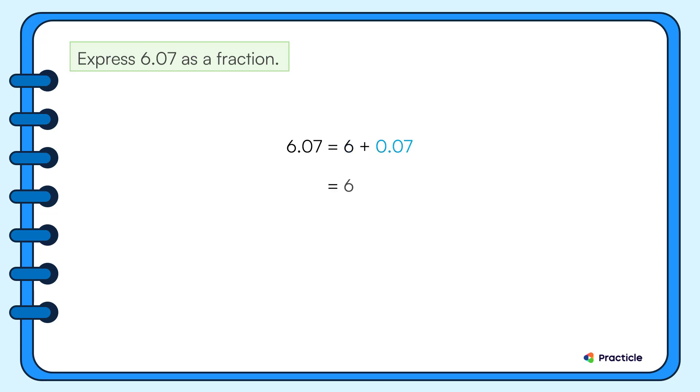0.07 is the same as 7 hundredths. When we write this as a fraction, we can write it as 7 out of 100.